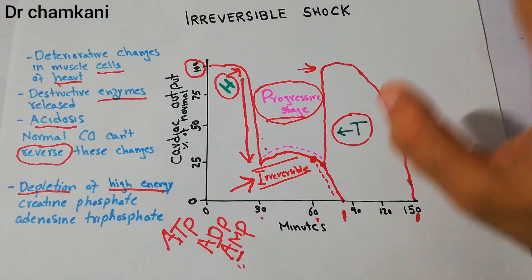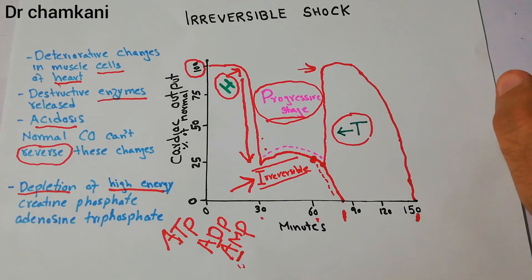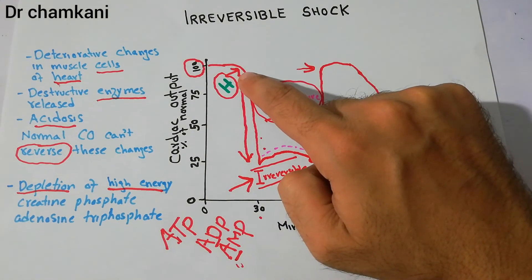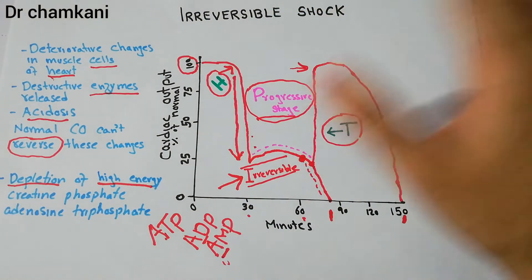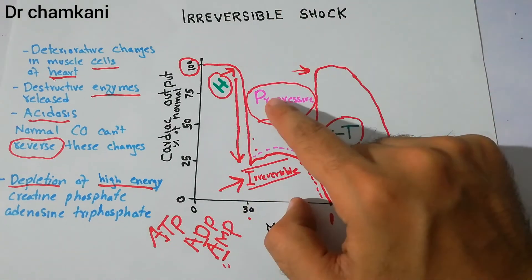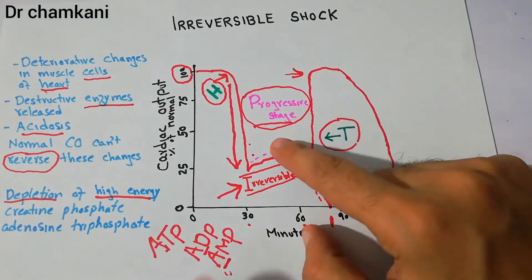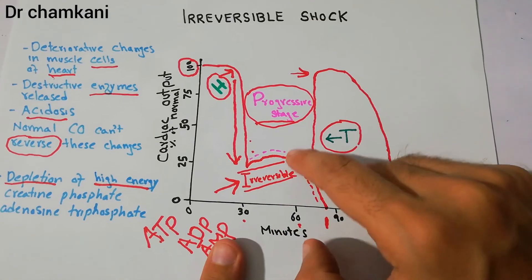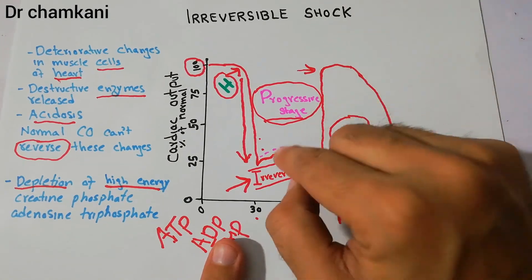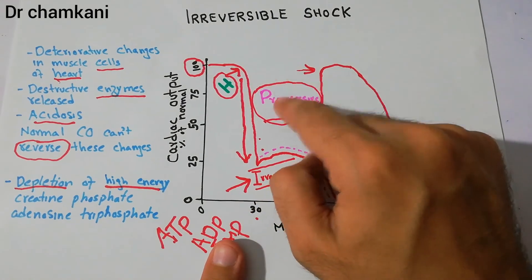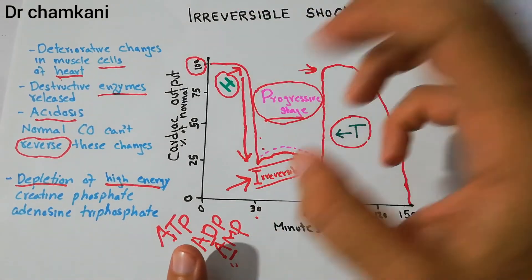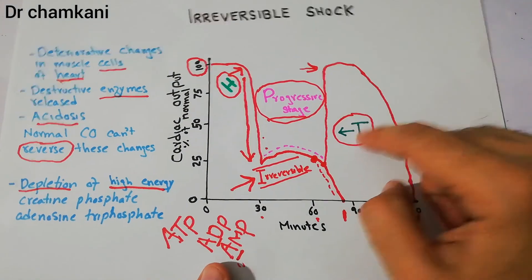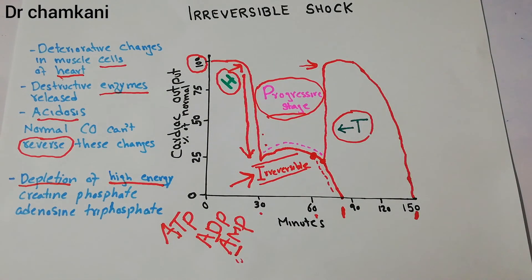To summarize: shock has three stages. The first is non-progressive shock — if there is a small hemorrhage, the shock will recover on its own without treatment. The second is progressive shock, where deterioration is ongoing but timely treatment can allow the patient to recover. Finally, there is the irreversible stage, in which even treatment will not be helpful. That's all about irreversible shock.